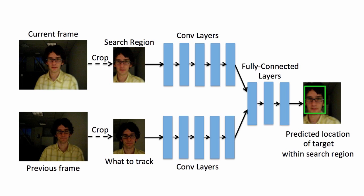The network is trained on thousands of pairs of frames from many videos with known bounding boxes. To augment the data, the authors also use images as the previous frame and transformed versions of the images as the current frame.